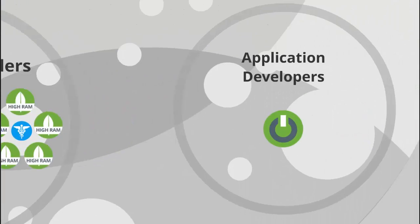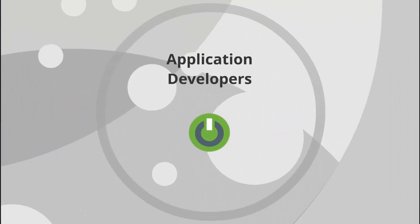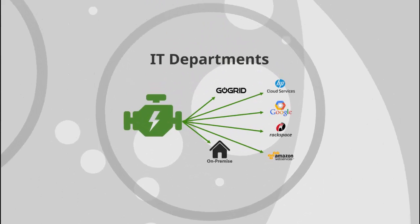Applications developers, leaders of the DevOps movement, can easily create automated test and dev environments, and production users can automate disaster recovery. Lastly, IT departments benefit by avoiding lock-in, using off-the-shelf technology and delivering flexibility across multiple clouds and even on-prem facilities.